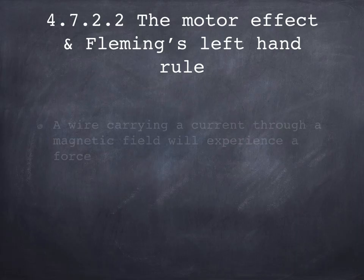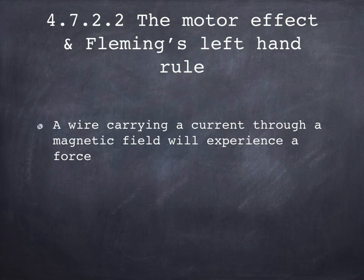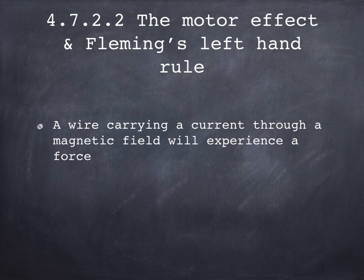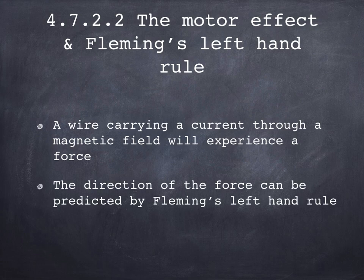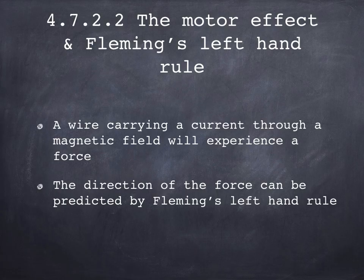So to summarize, a wire that's carrying a current would experience a force if it moves through a magnetic field. And it's worth knowing that at GCSE, the wire and the magnetic field are always going to be at right angles to each other. And the direction of that force could be predicted using Fleming's left hand rule.